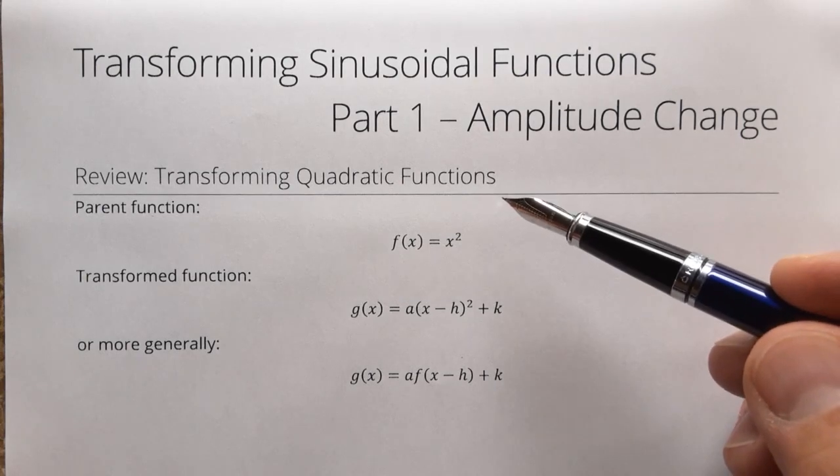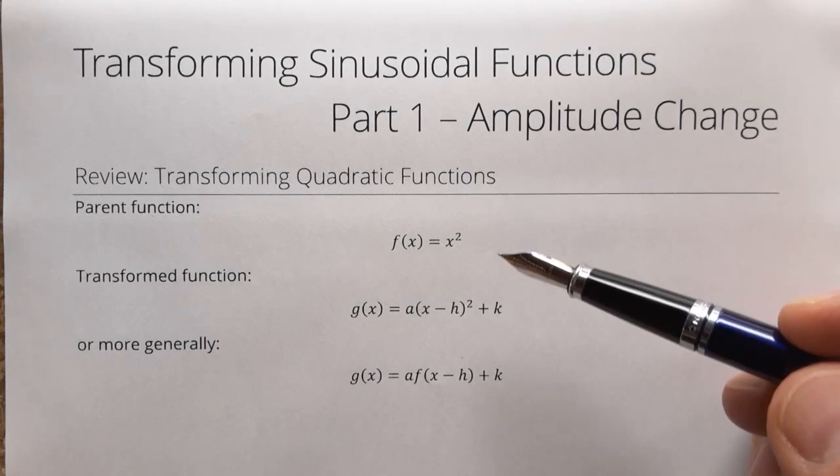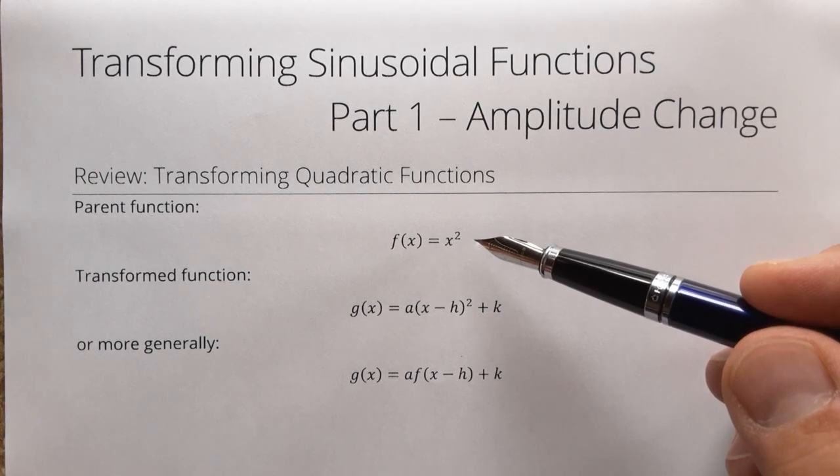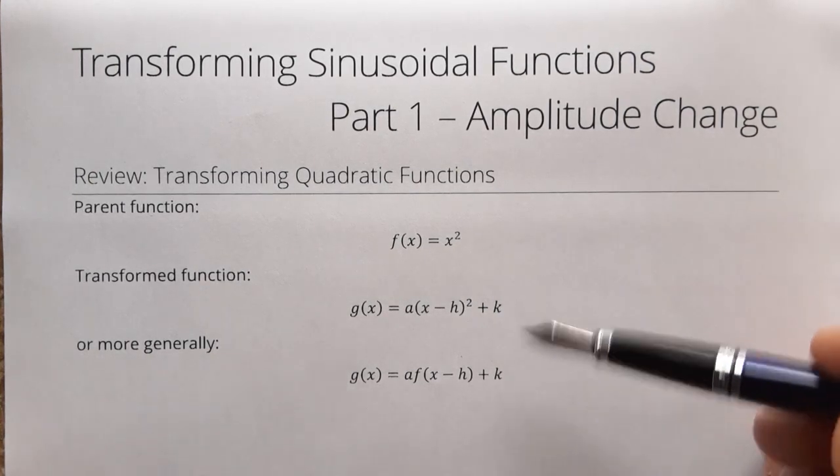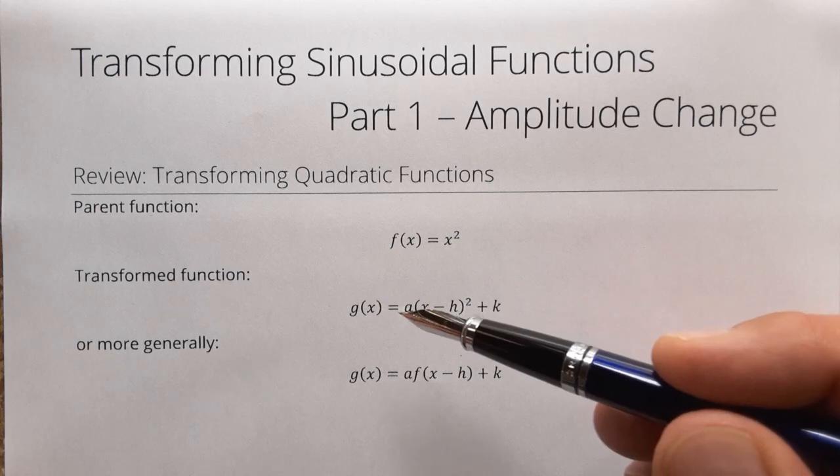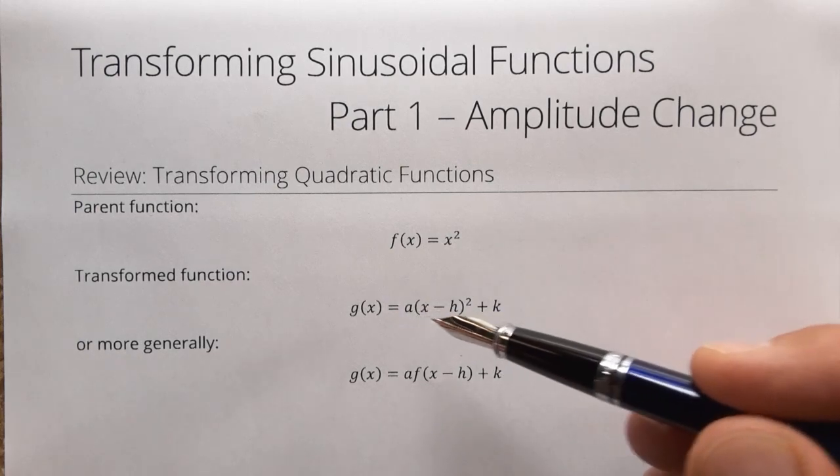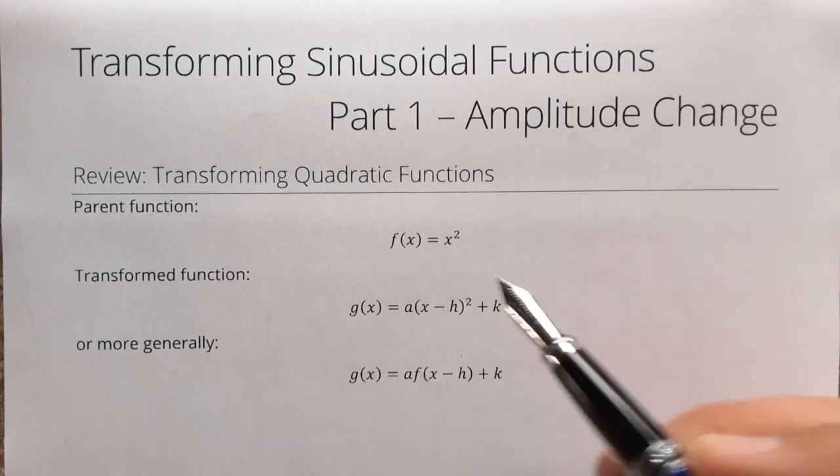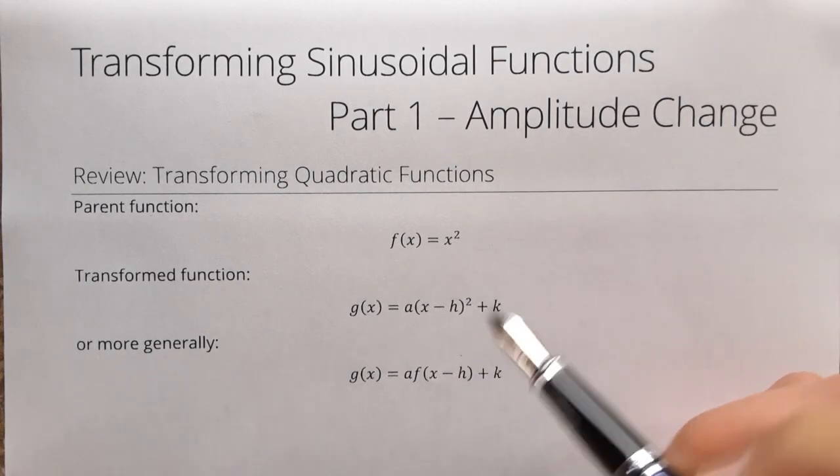To start with, let's review quadratic functions and how we transformed those. This is the parent function, f of x equals x squared, and I have a couple of transformed functions, different ways to write it. g of x is a times x minus h squared plus k. Now this was the vertex form you might remember.